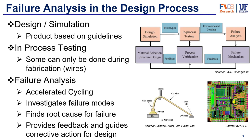First you get a prototype and then you start testing. Some tests can only be done during the process — for example, the wires are inaccessible once you cover them with the package, so testing them must be done in-process. These tests can include the wire pull test or the ball shear test, which give you an idea of the chip's physical resilience. You can also do electrical tests to verify that all electrical components work as intended, and if they don't, that's where failure analysis comes in.